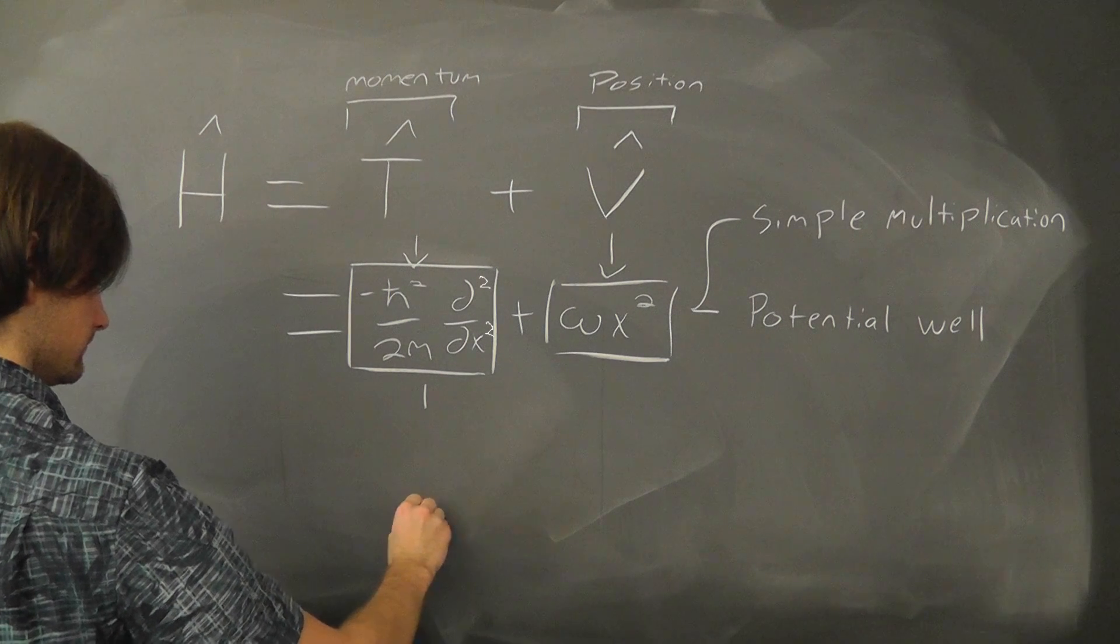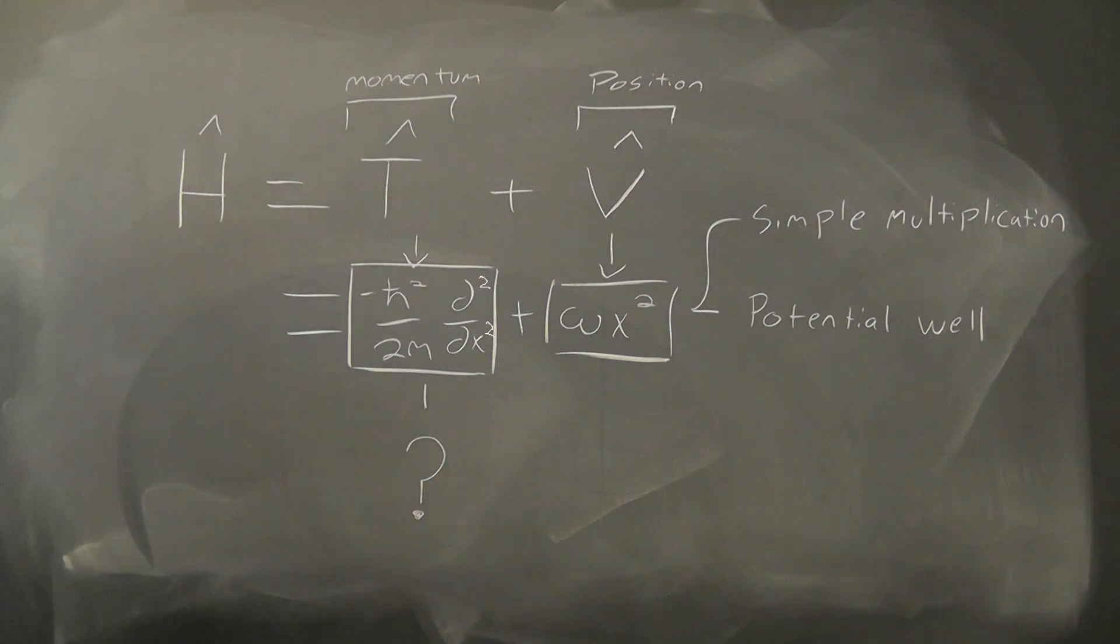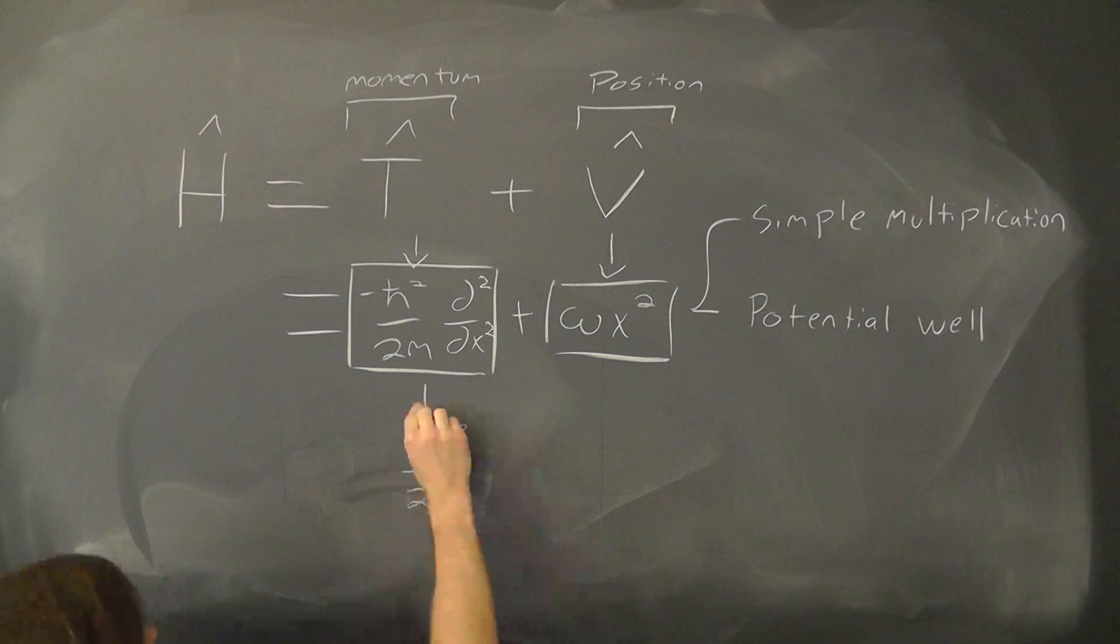That said, the momentum space operator is a bit tricky to understand. However, rather than interpreting it as some sort of complicated derivative in position space, we can think of it as a simple multiplication in momentum space, p.